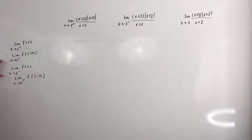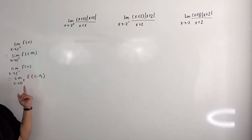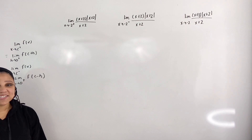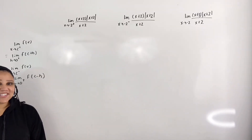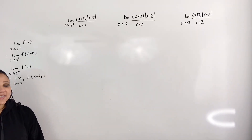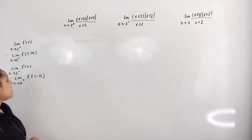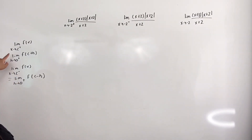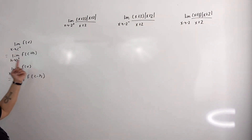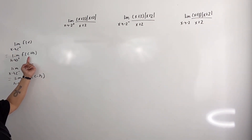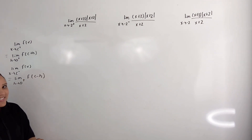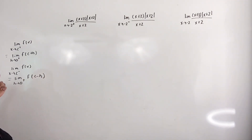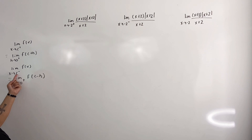Notice that in both cases, h is approaching 0 from the right, and that is because h is always positive. However, when x approaches c from the right, we plug in c plus a positive h. And when x approaches c from the left, we plug in c minus a positive h.